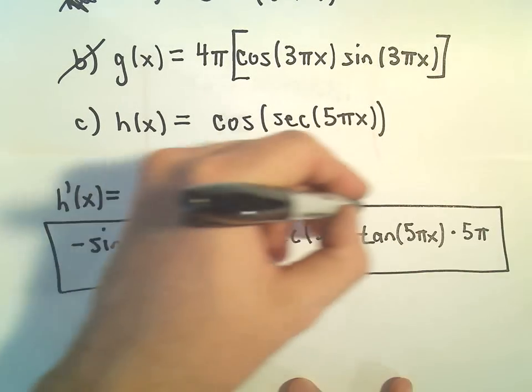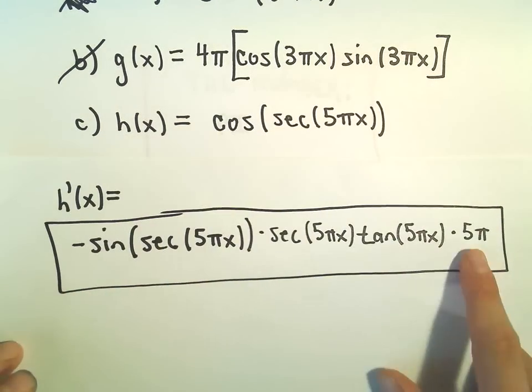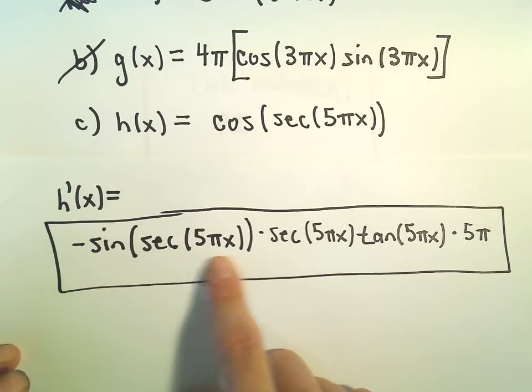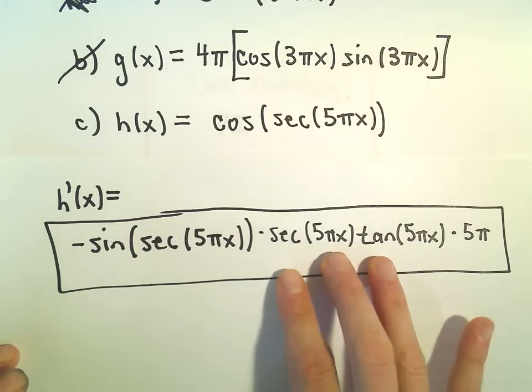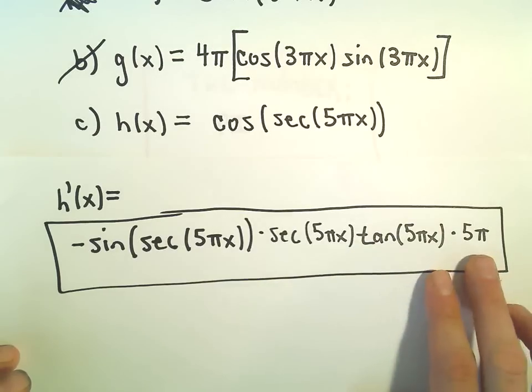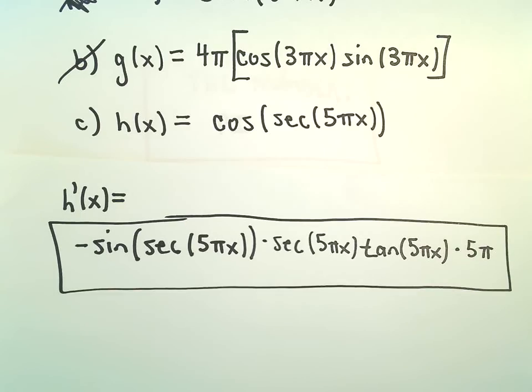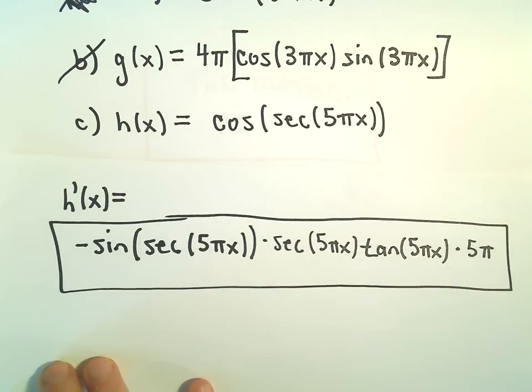I don't think there's a lot of simplification we could do. You might write this as negative 5 pi sine of secant 5 pi x times secant 5 pi x tangent 5 pi x. There's really not much to do except pull the 5 pi out front. Not a good way that I can see to simplify this and condense it down to something more compact.